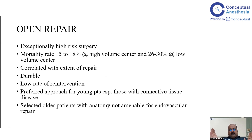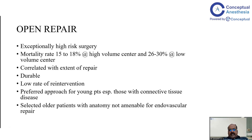Mortality and morbidity correlate with the extent of repair. Abdominal aortic aneurysm repairs and Crawford type 4 have lower mortality, while Crawford types 1 and 2 have high mortality and morbidity. However, open repairs are durable, require low rates of re-intervention, and are the preferred approach for young patients — especially those with connective tissue disease — and for older patients with anatomy not amenable to endovascular repair.